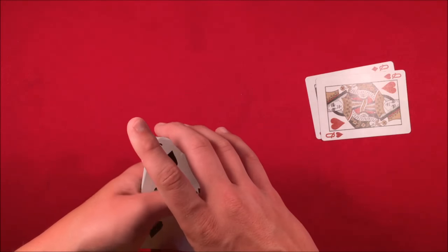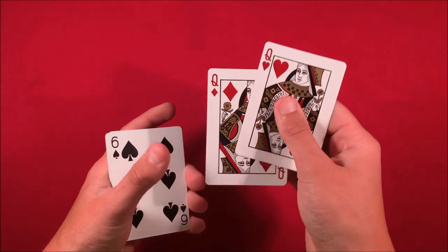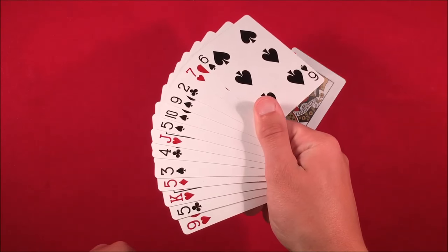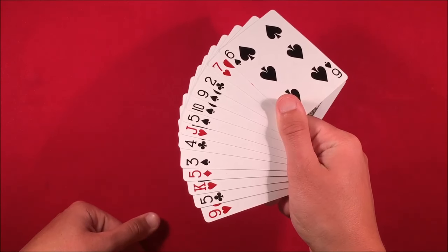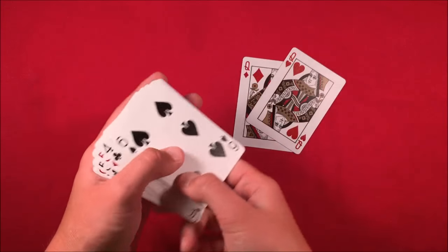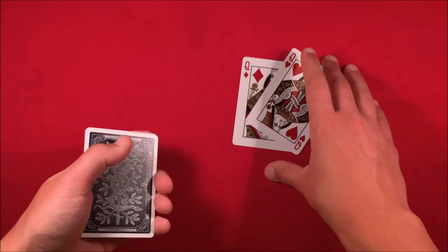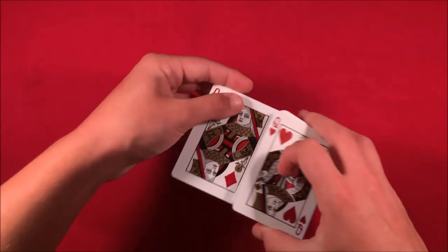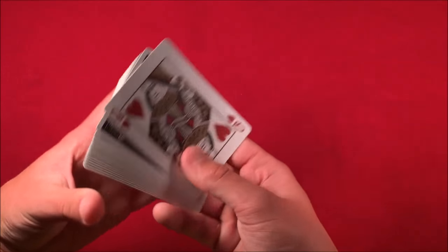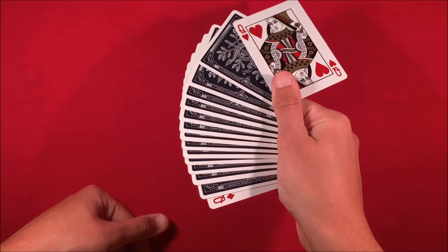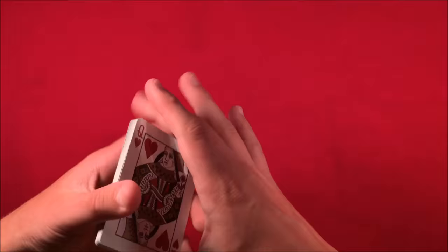Take the two red queens and 13 random cards - they can be any cards in the deck. Go up to a spectator with the queens sandwiching the deck like this, and tell them you're going to have them pick a card.